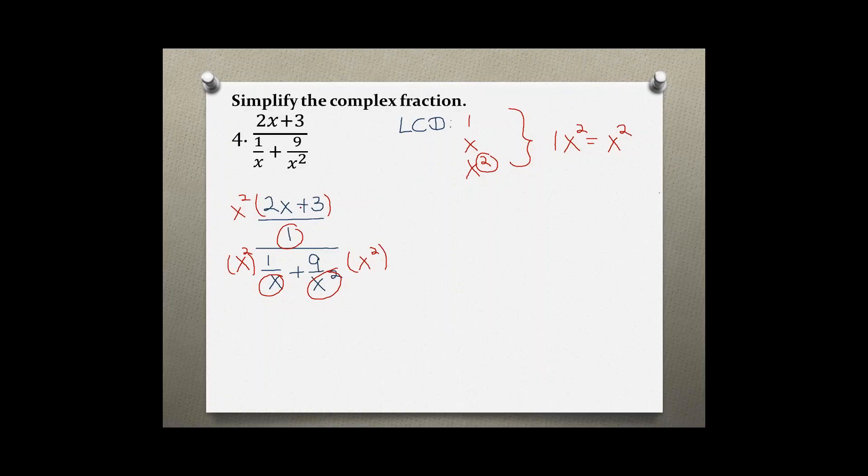Now I'm clearing the fractions. So x squared and 1, nothing really cancels out. Then over here, x squared and x, 1x is gone, and then x squared and x squared cancel each other out.